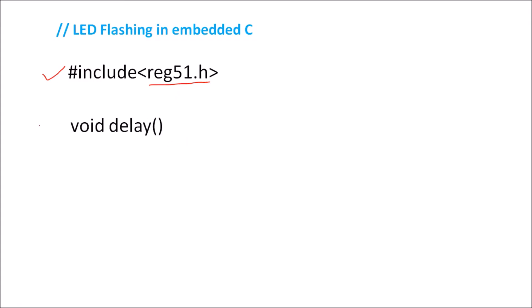We will write a delay function because we want to flash LEDs with some delay. A simple function is written: void delay, because it is not going to pass any parameter. We will write a for loop to keep the microcontroller busy and generate a delay. I generally prefer writing other functions first and then the main function.